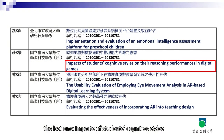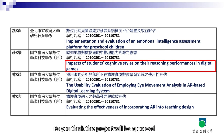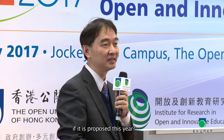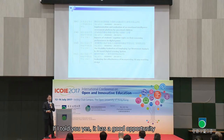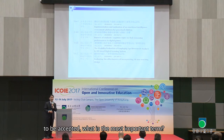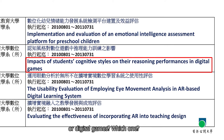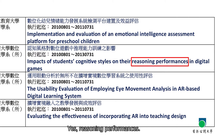'Impacts of student cognitive style on their reasoning performance in digital game.' Would this be approved today? The most important term is 'reasoning performance' — it's also a higher-order thinking competence. The other key term is 'student cognitive style,' which adds another dimension of innovation.